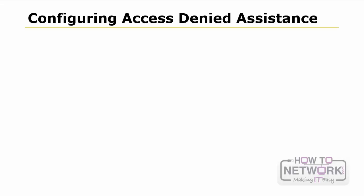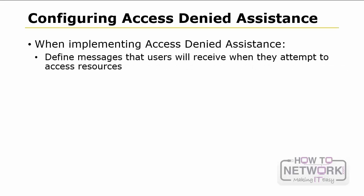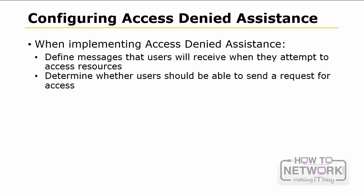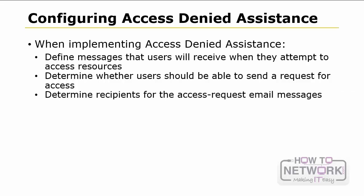When you plan for Access Denied Assistance, you should include the following. Define messages that users will receive when they attempt to access resources for which they do not have access rights — the message should be informal and easy to understand. Determine whether users should be able to send a request for access via email; if so, you can optionally configure the text added to their email messages. Determine the recipients for the access request emails — you can send email to folder owners, file server administrators, or any other specified recipient. Messages should always be directed to the proper person. If you have a help desk tool or monitoring solution that allows email messages, you can also direct those messages to generate user requests automatically in your help desk solution.